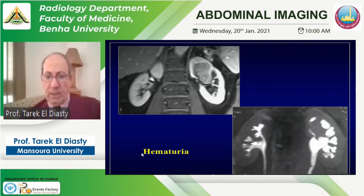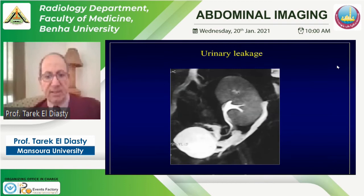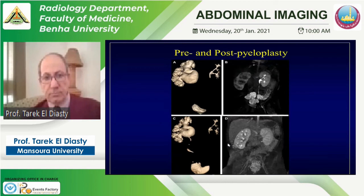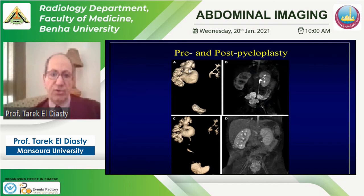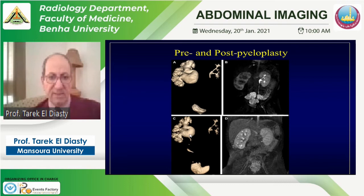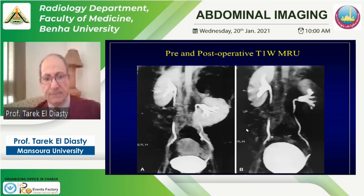A mass at the upper caliceal group in a patient with hematuria shows erosion of the upper caliceal group on excretory MR urography due to a large urothelial carcinoma. In a kidney transplant recipient with urine leak, excretory MR urography shows gadolinium outside the normal ureter and bladder, confirming urinary leakage. Pre- and post-pyeloplasty in a pediatric patient: pre-operatively a large renal pelvis with no contrast excretion; post-operatively significant reduction in pelvis size with contrast excretion, showing improvement in both morphology and function.